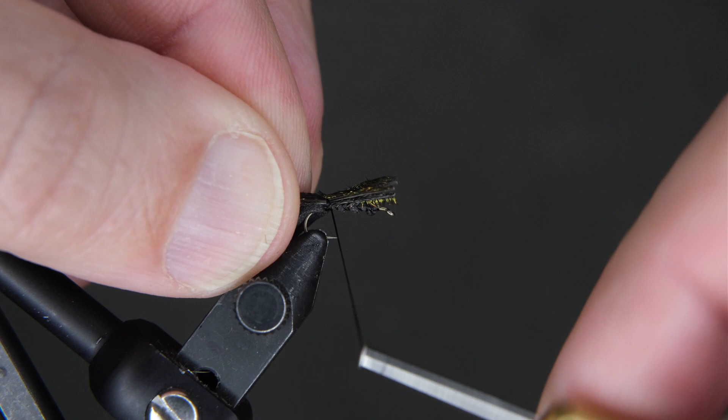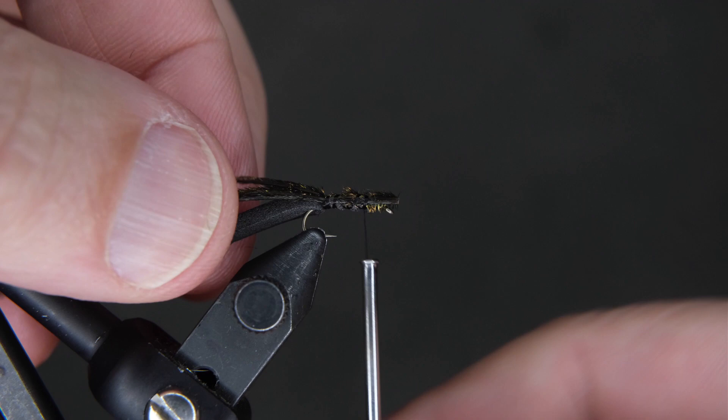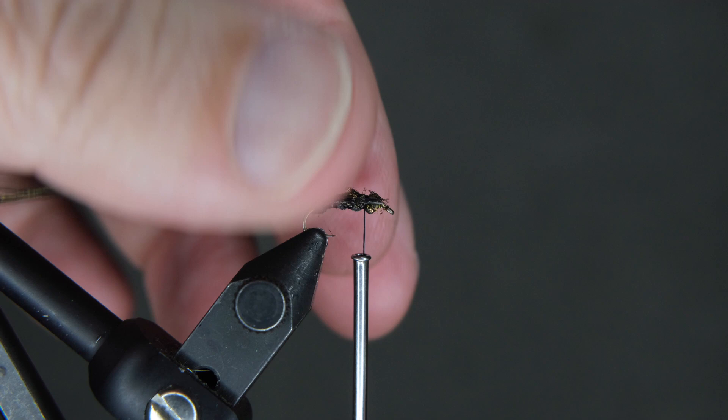Tie it down best you can, nice and firm. We're going to run that all the way to the front. Hold on to it as you move it so it doesn't wrap around the shank. Then at a severe angle, cut this off so we don't have a sharp dam at the front of the hook.